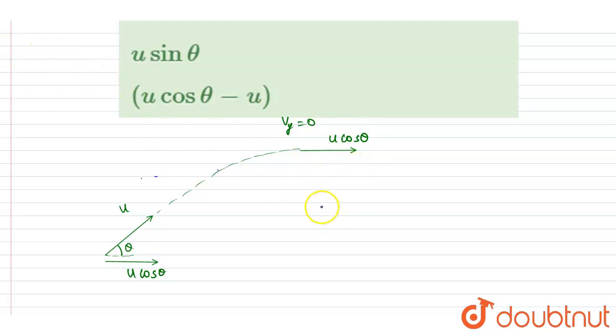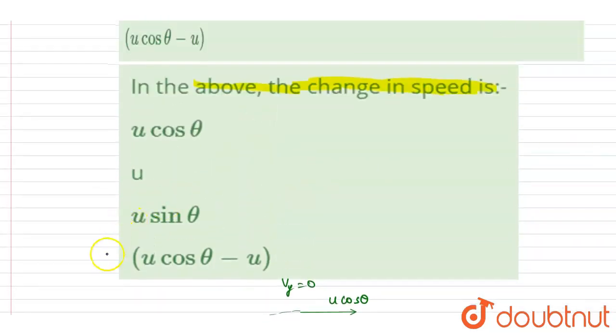So if I talk about the change in speed, change in speed is equals to u cos theta minus u. Now you can check here, d is the correct.